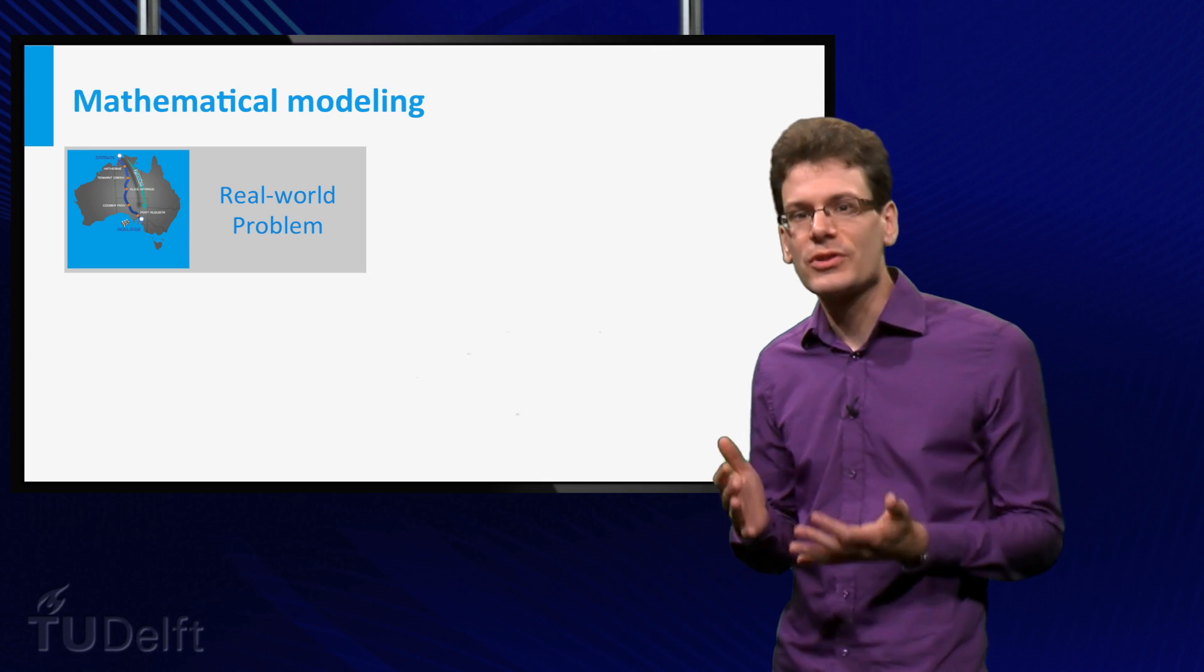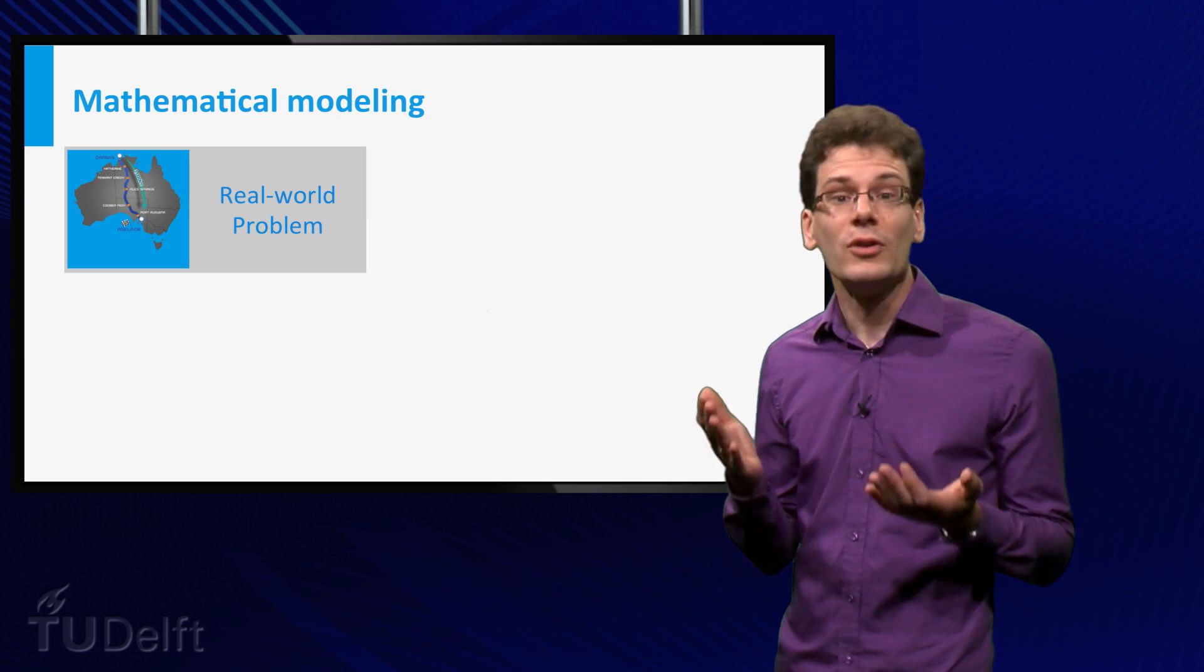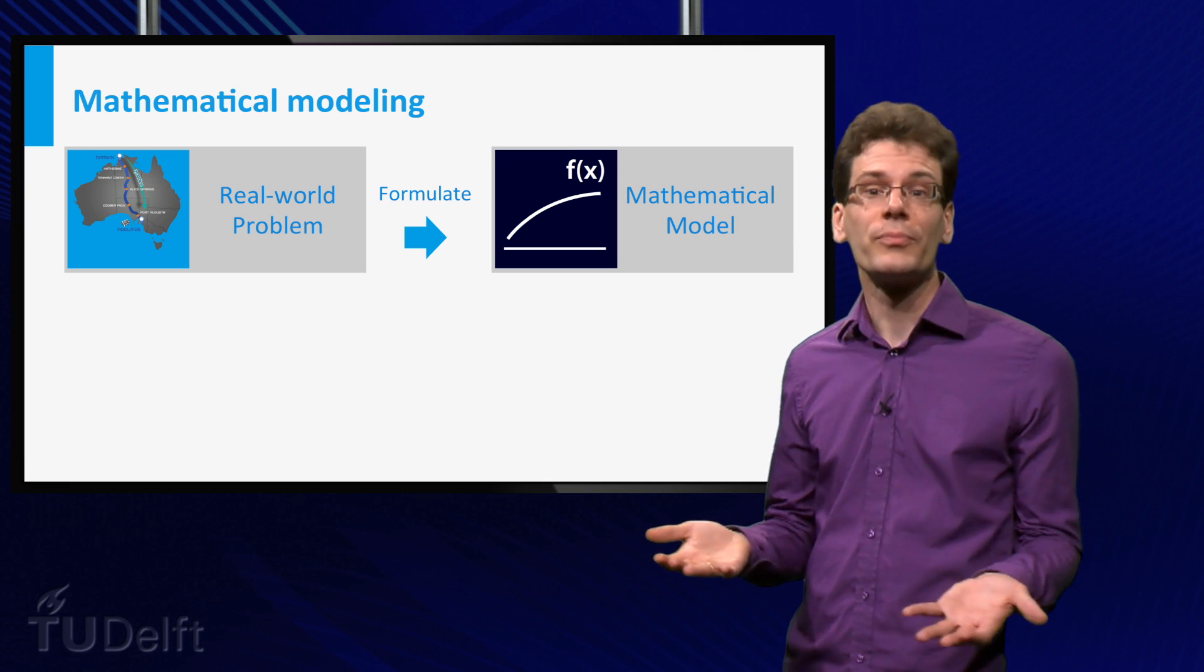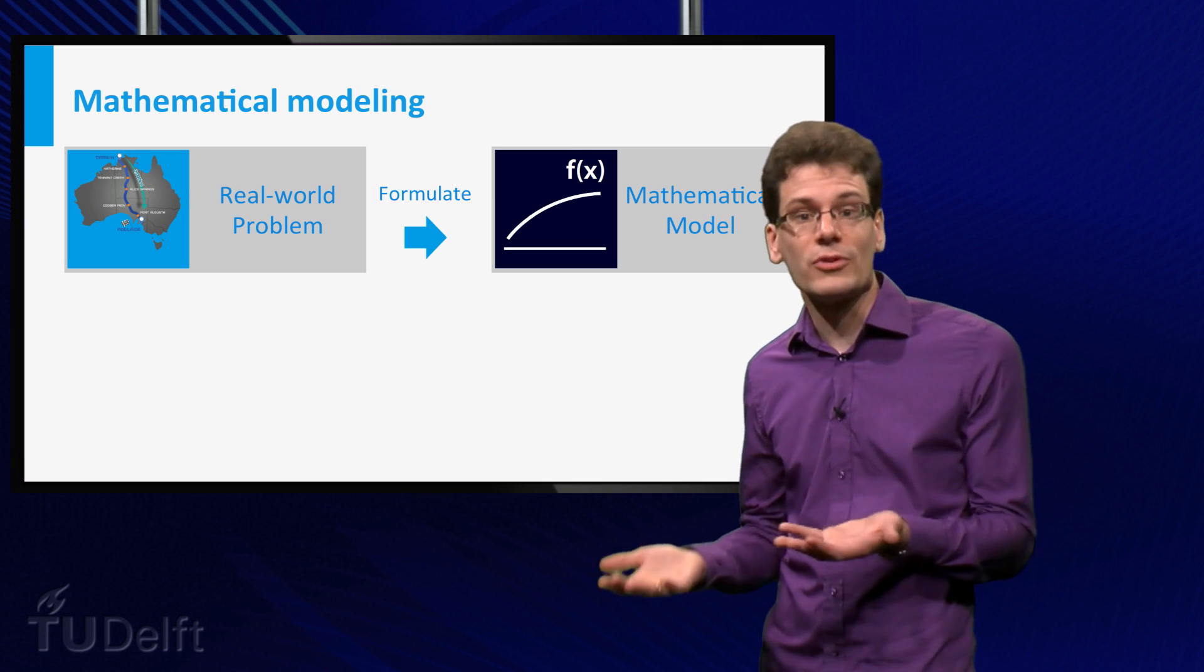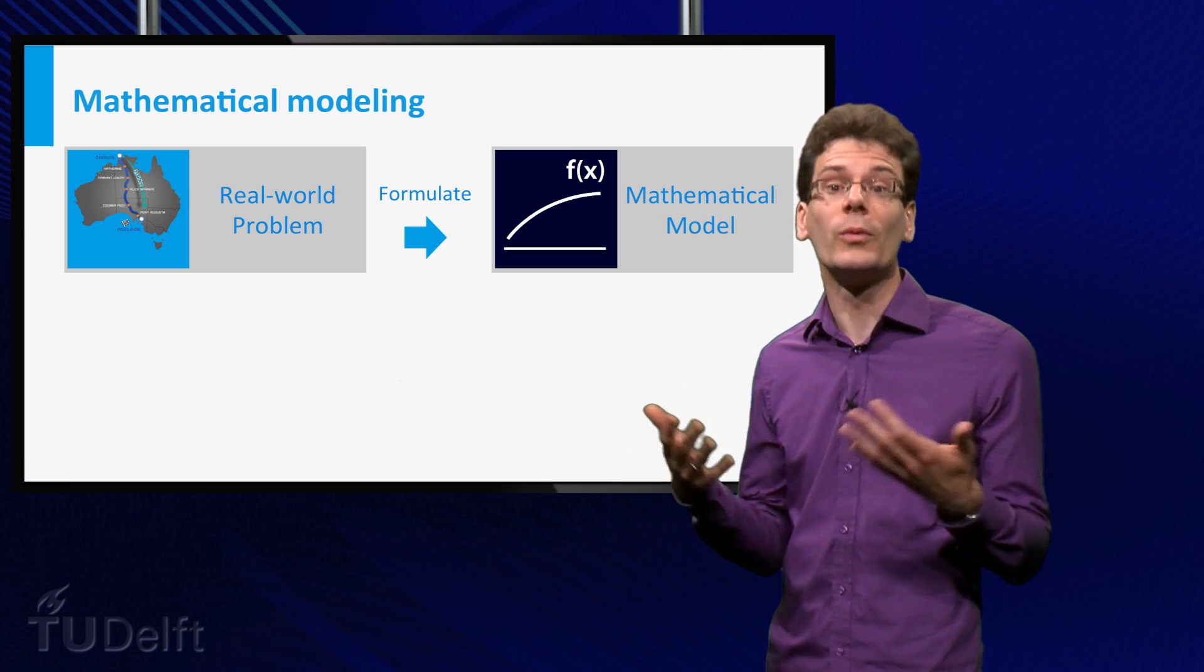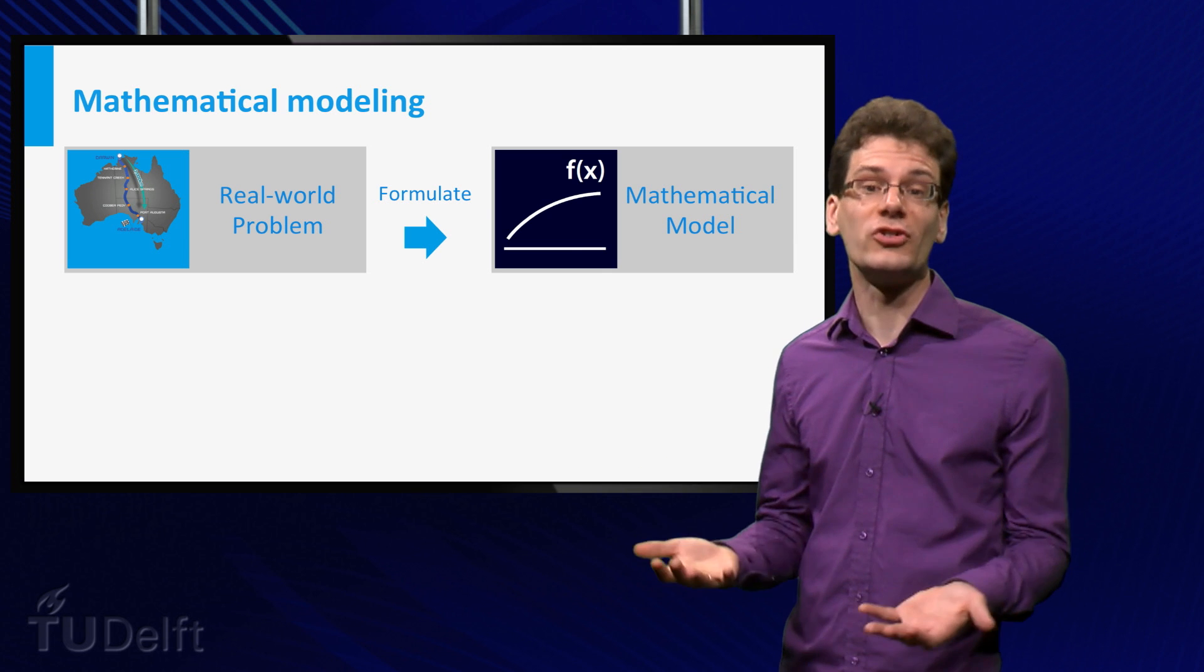Here starts the modeling cycle that is used in science, design and engineering. You have a real-world problem and you try to reformulate it in terms of a mathematical model. A mathematical model describes the relation between the different parameters that are of influence in this real-world problem. Such relations are described by mathematical functions.